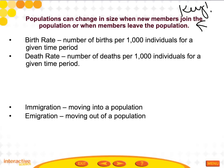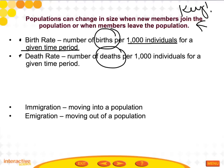Here are a couple of new definitions: birth rate and death rate. Both refer to the number per 1,000 individuals in a given time period — birth rate is the number of births and death rate is the number of deaths. If birth rate is higher than death rate, we have population growth. If death rate is higher than birth rate, the population decreases. If they are equal, the population stays the same.